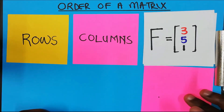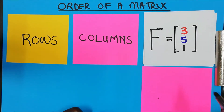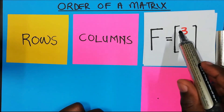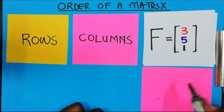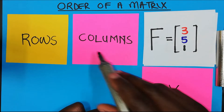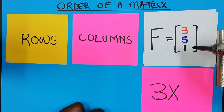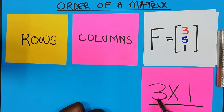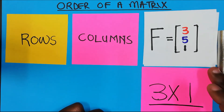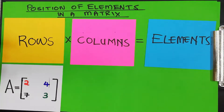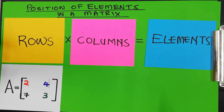The last one is matrix F. Matrix F has one, two, three rows — so it has three rows. And how many columns does it have? It has only one column. So this is a three by one matrix.